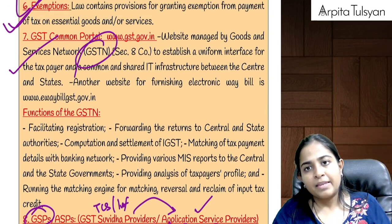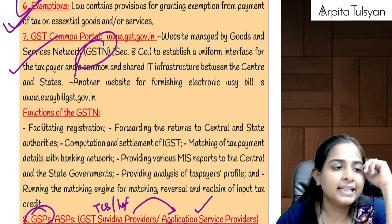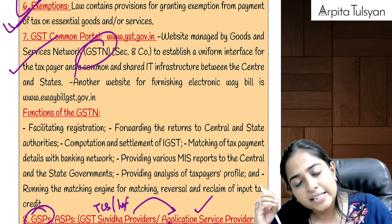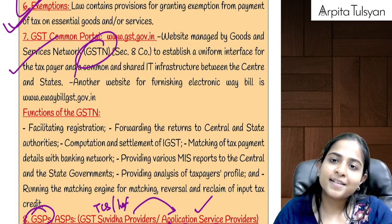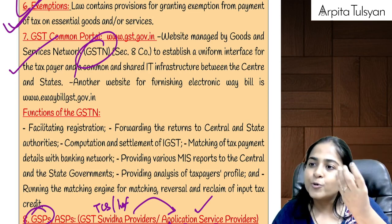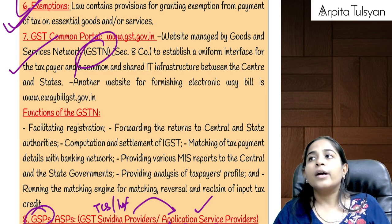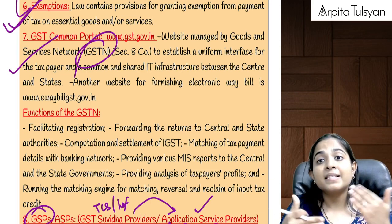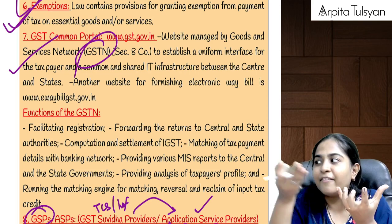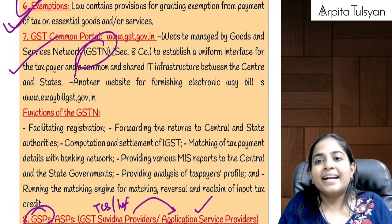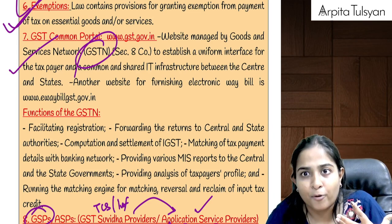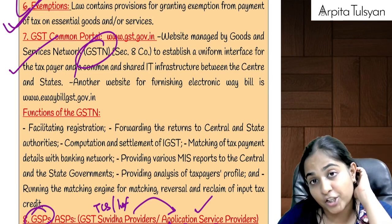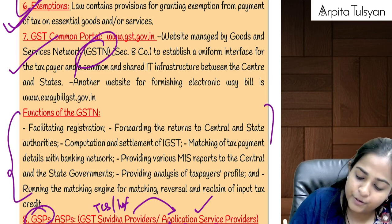What is the function of GSTN? They are maintaining this website for the purpose of: if anyone wants to get registered under GST — use this website. If you want to make the payment of taxes — use GST portal. If you want to file returns to the government — use this website, the GST Common Portal. Also, the bifurcation of IGST between center and the state will be done by the GST portal backend. MIS reports — Management Information System reports — will be generated by the portal and shared with the central government and state government.